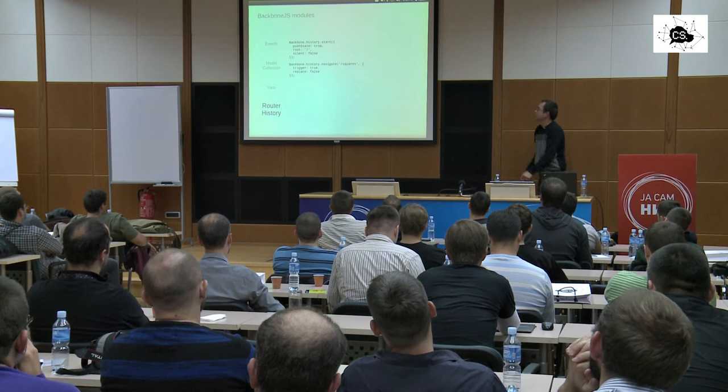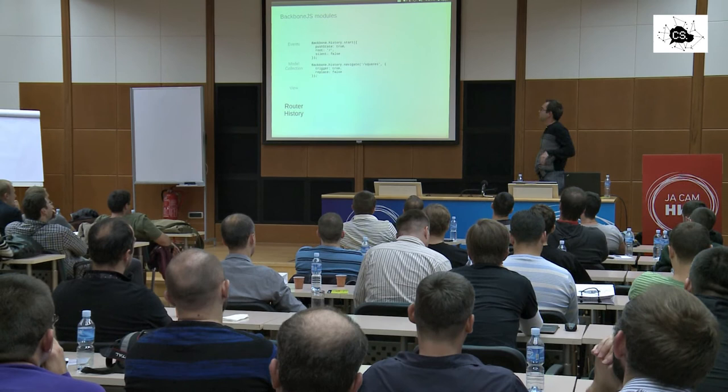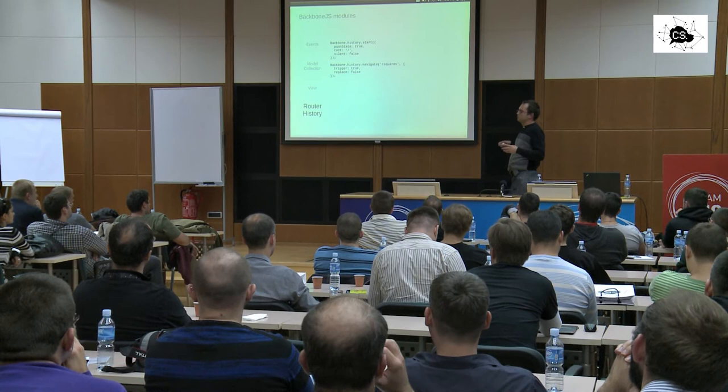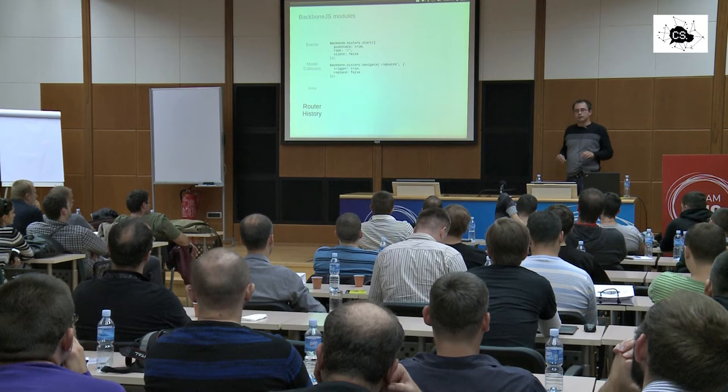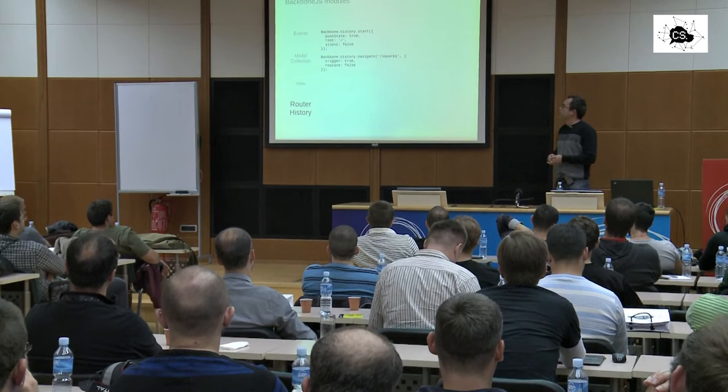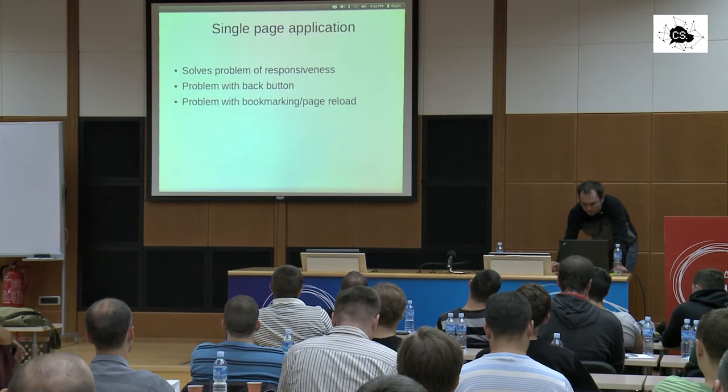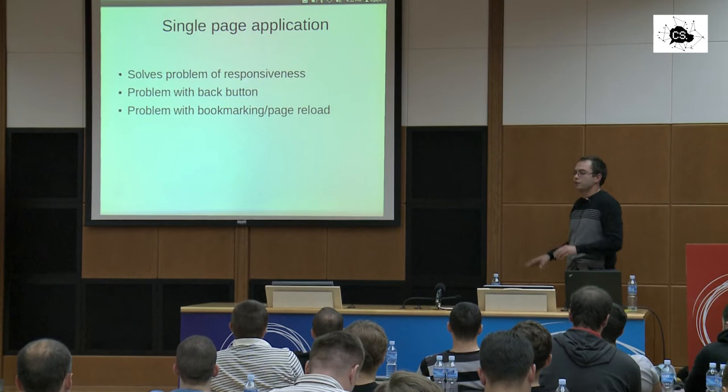And the other thing is history. So history is actually Backbone's included module. You don't want to inherit it. But because it handles history state of your application. So whenever URL changes, Backbone history is remembering that. And it fixes back button and generally application state. Kind of problem that we are running into when we are developing an SPA, single page application. Backbone. So these are just the basics of Backbone.js. And what's this whole presentation about is how we can write a single page application using Backbone. But why do we need single page applications at all? That's the question.